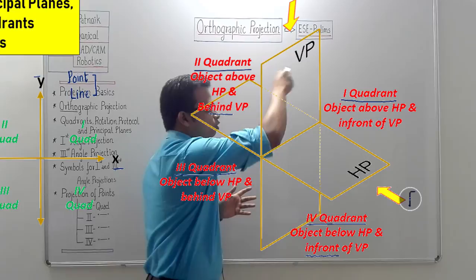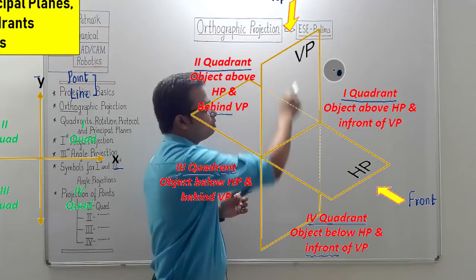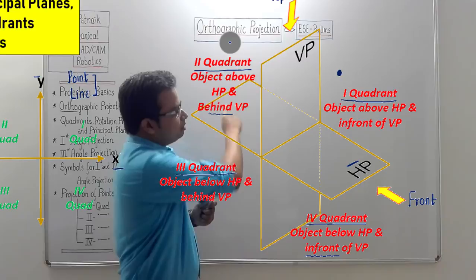Always remember: this is where you view the front, and this is for the top. If an object is in the first quadrant, the sequence is: observer → object → plane of projection, which is the VP. When viewing the same object from the top, the sequence is: observer → object → HP as the plane of projection.